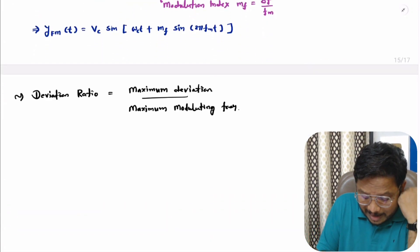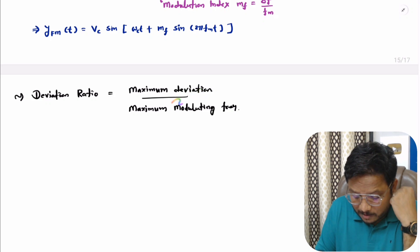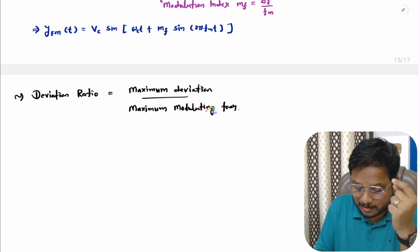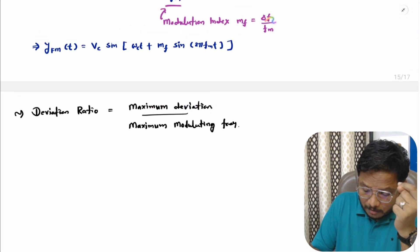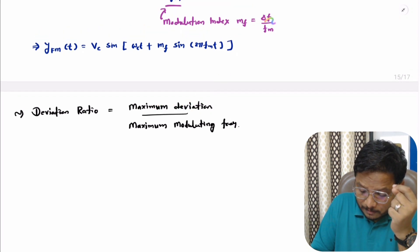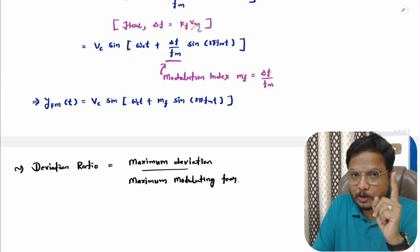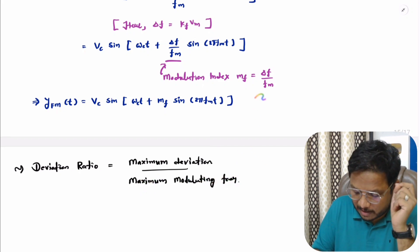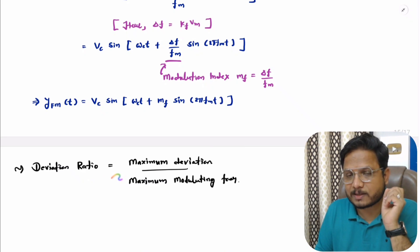One more definition is the deviation ratio, which is the maximum deviation divided by the maximum modulating frequency. For single-tone FM, maximum deviation is Δf = kf·Vm and the maximum modulating frequency is fm. Therefore, the modulation index equals the deviation ratio for single-tone frequency modulation.